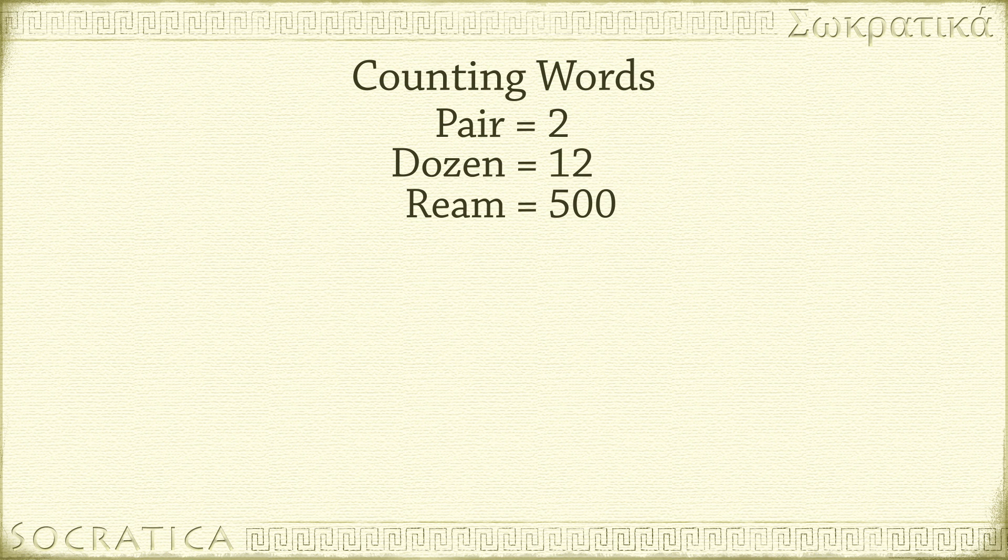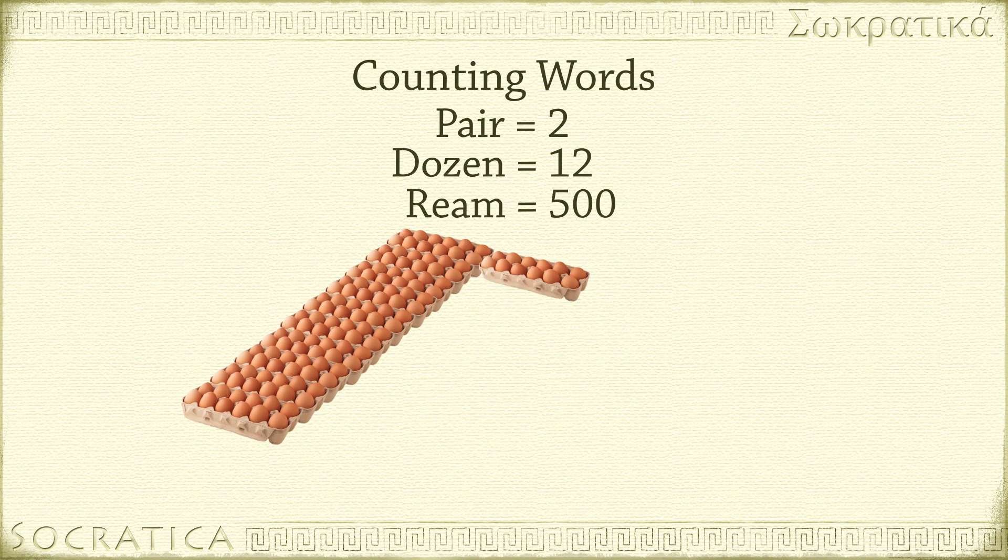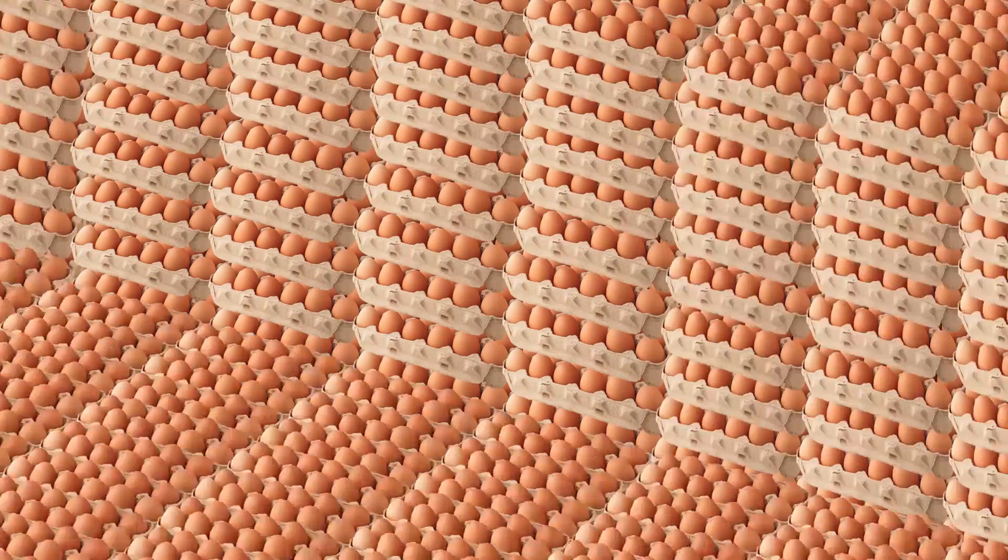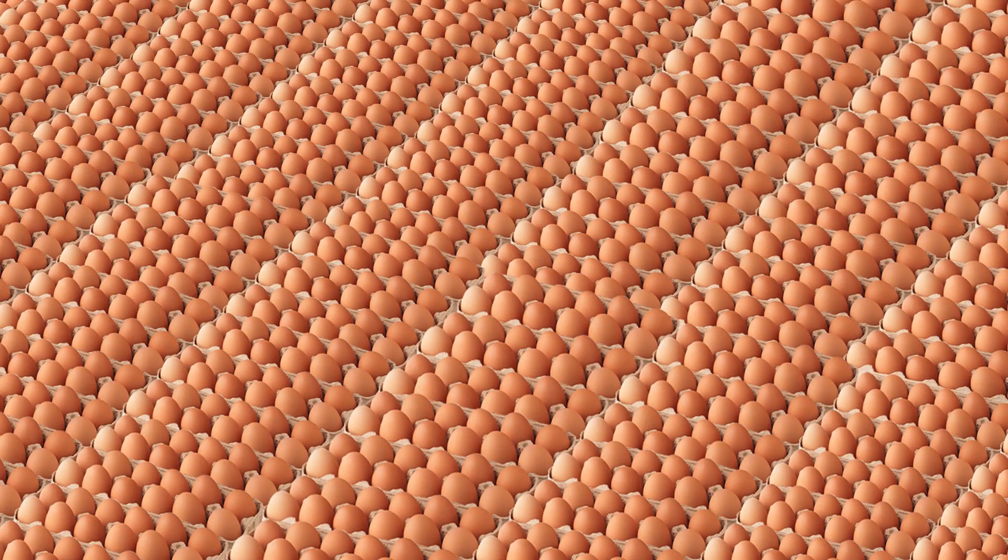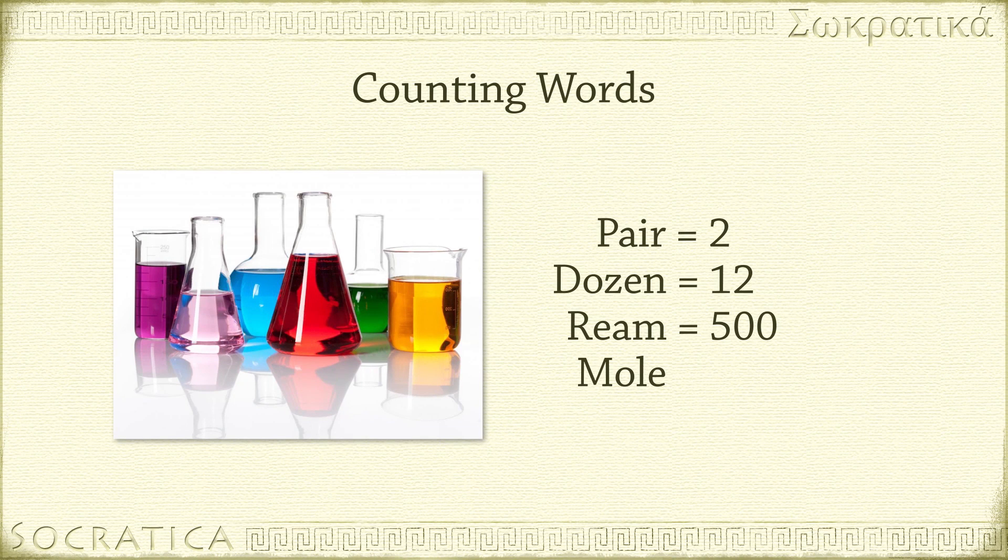You wouldn't ask for a pair of eggs, or a ream of eggs. And you wouldn't ever ask for a mole of eggs. That's way too many eggs. But a mole makes sense if you're talking about particles in chemistry. A mole is another counting word, like a pair or a dozen, but it's used to count a very large number of objects.